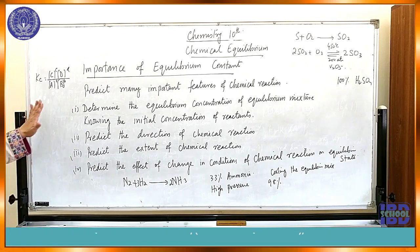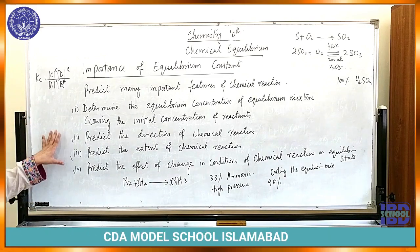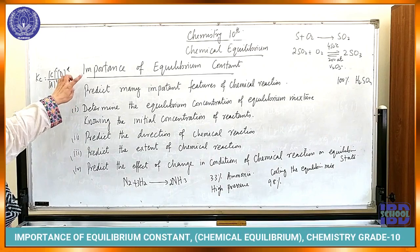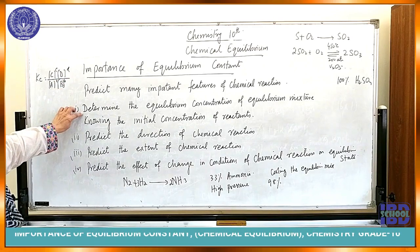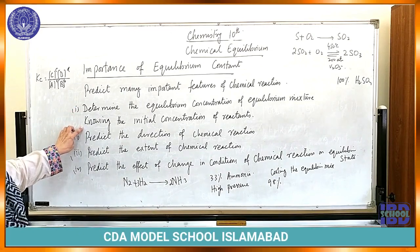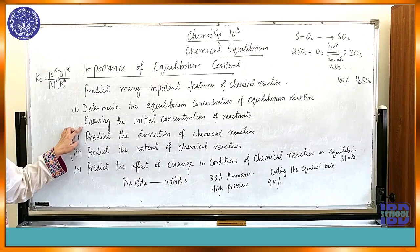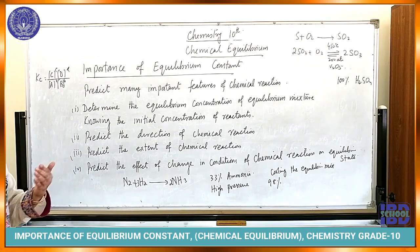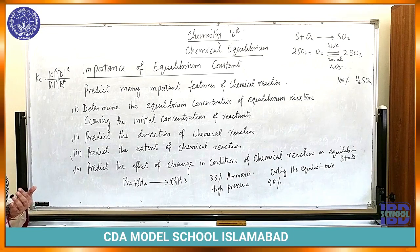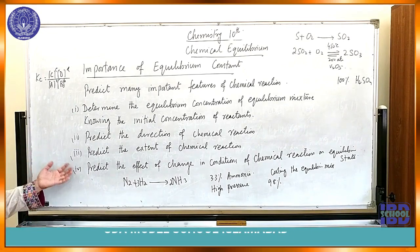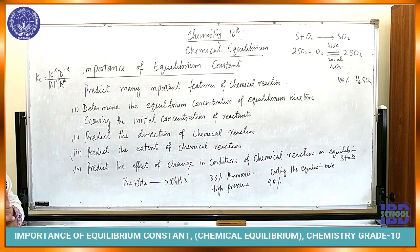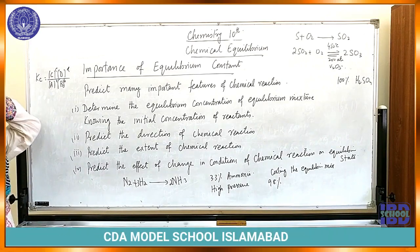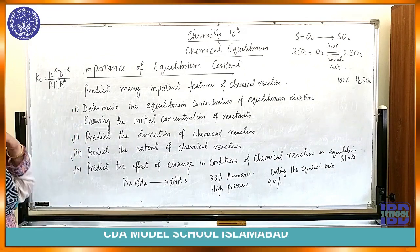To revise: the equilibrium constant determines the equilibrium concentration of the equilibrium mixture knowing the initial concentration of the reactants. If you know the initial concentration of the reactants, then you can determine the equilibrium concentration of the equilibrium mixture. We can determine these things by knowing Kc.